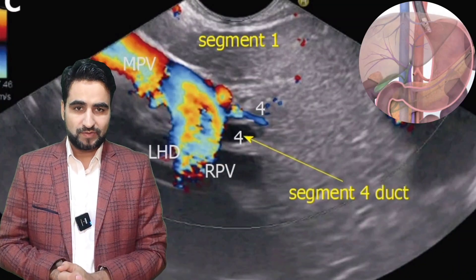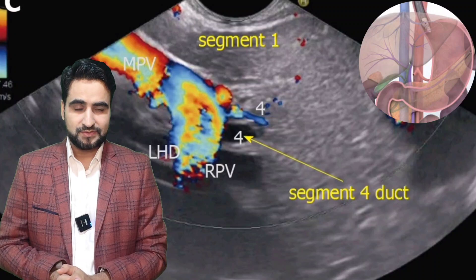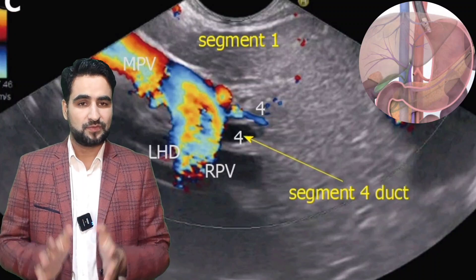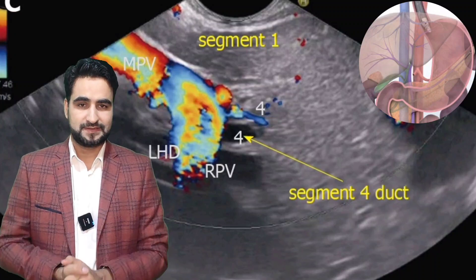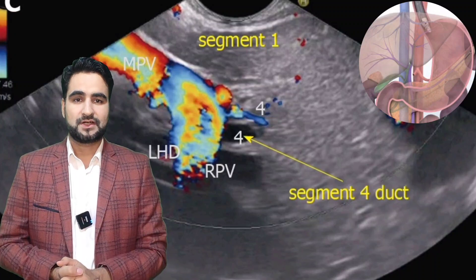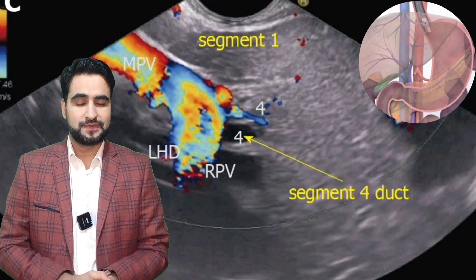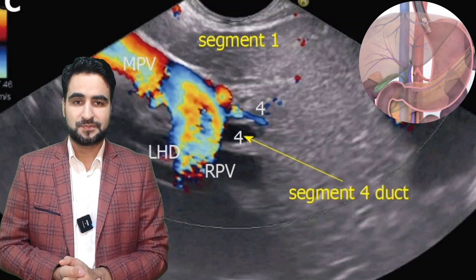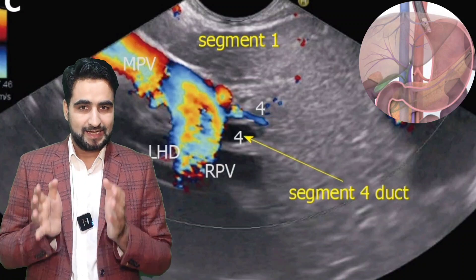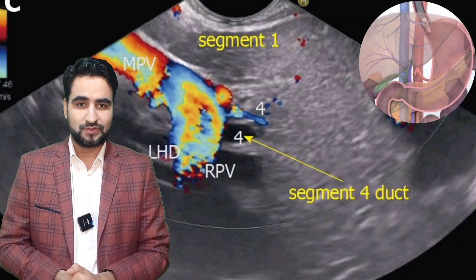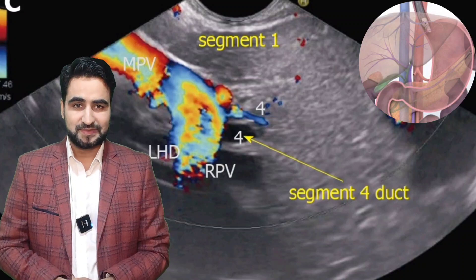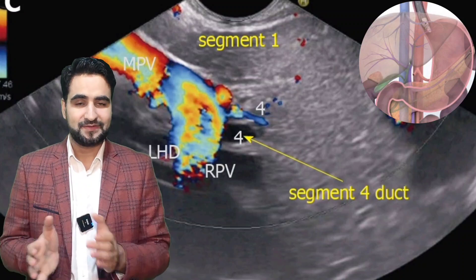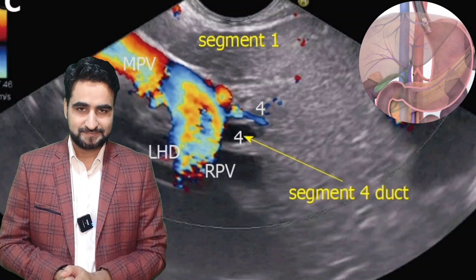On further clockwise rotation, new structures come into view from the right side of the EUS image. The caudate lobe — that is segment 1 — now appears closest to the probe, and therefore is displayed in the superior, near-field part of the image.